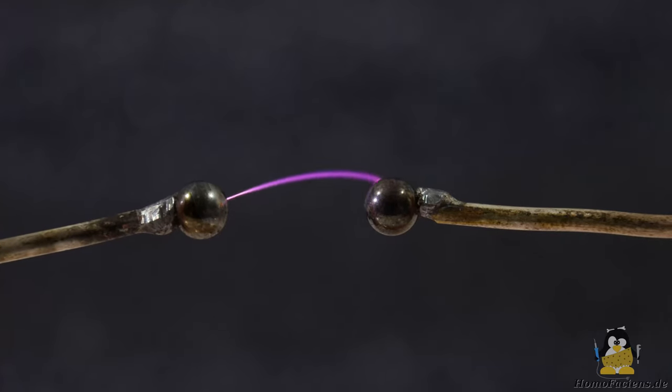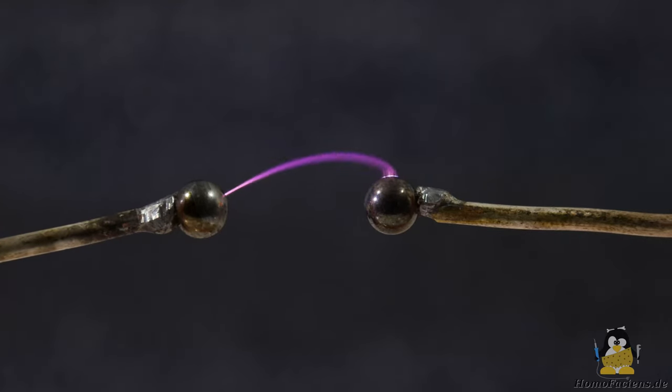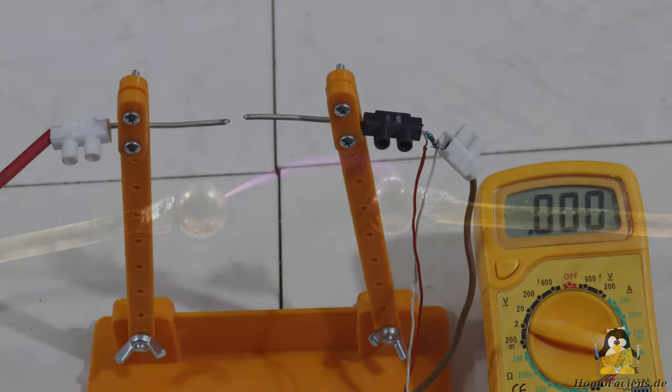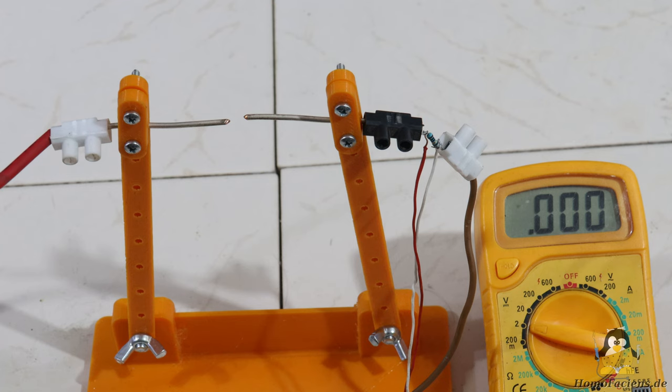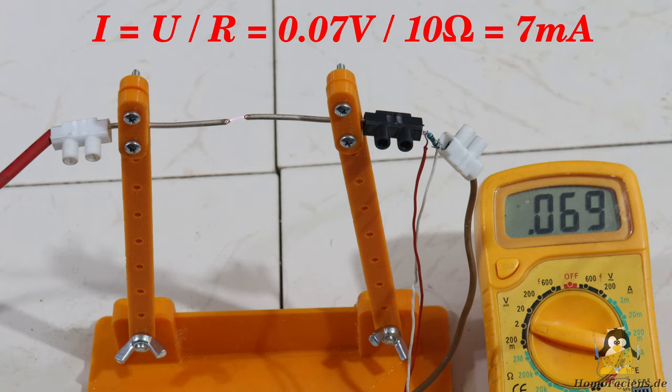Let's measure, or rather estimate the electrical resistance of the plasma. The voltage is the unknown variable in the circuit, because I don't own a multi kilovolt voltmeter. To measure the current, I put a 10 ohms resistor in the circuit. With a voltage drop of 0.07V, this results in a current of 7mA at an electrode spacing of 5mm.